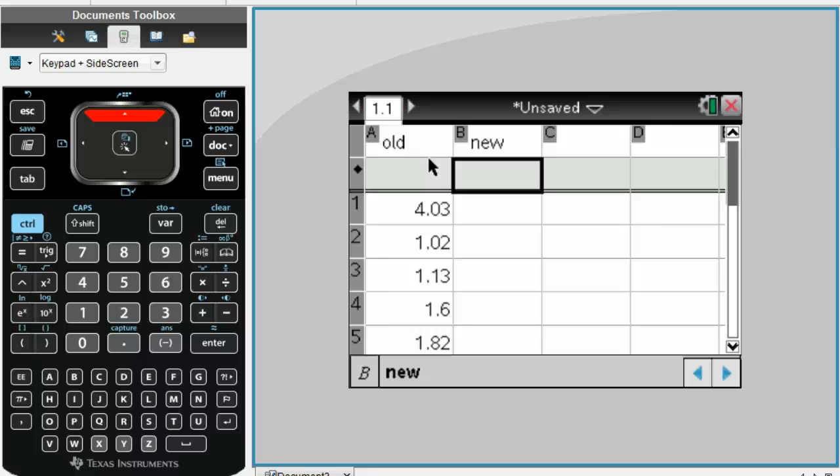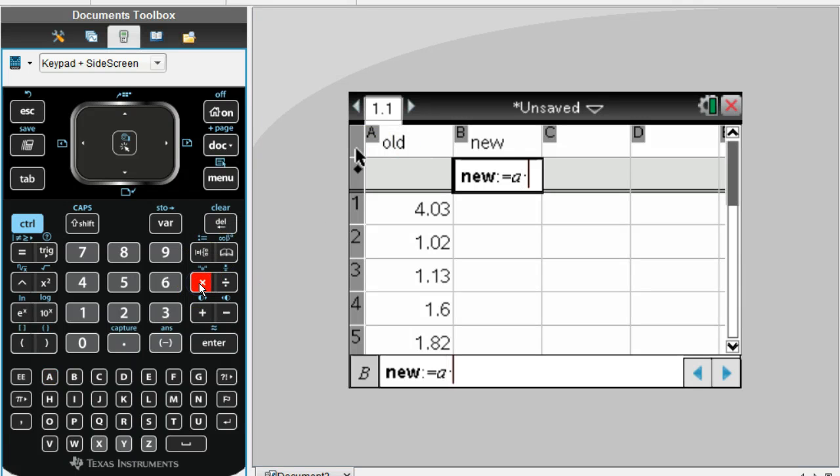In this gray column underneath new, type in equals. Notice how it automatically tells us that the new values are going to equal. Now, we just have to tell what is it going to equal. We're going to take each value in column A. So, I'm just going to type in A times that 1.322. When you get done typing that in, just hit enter.